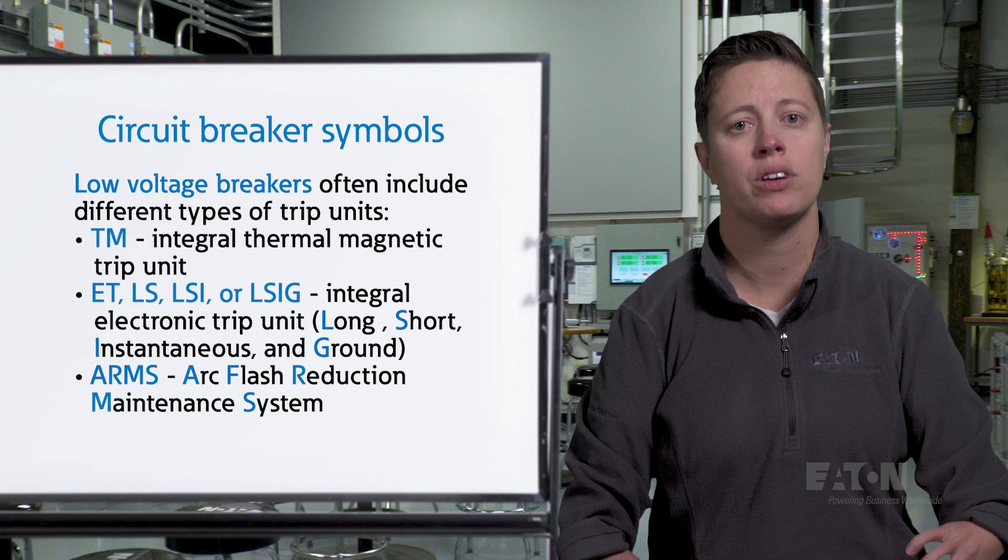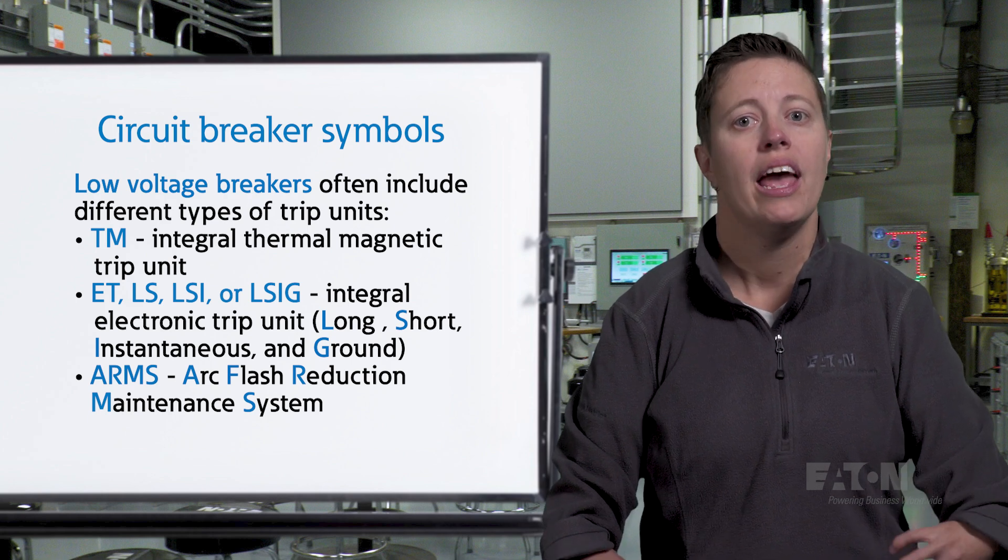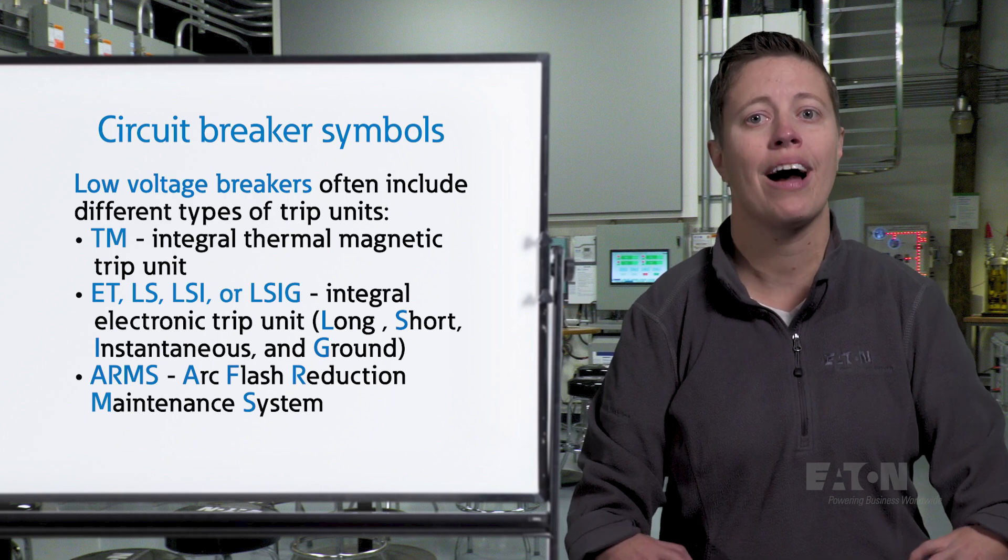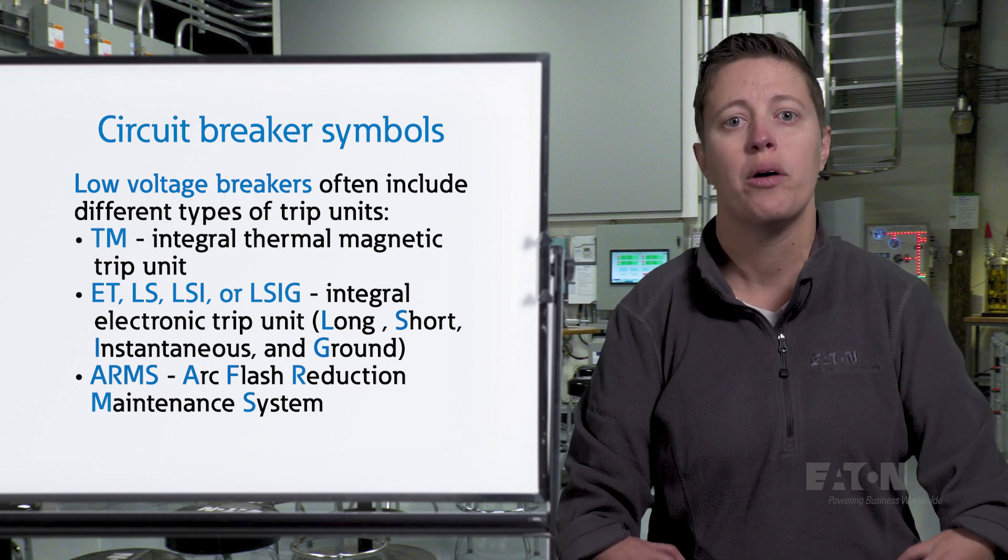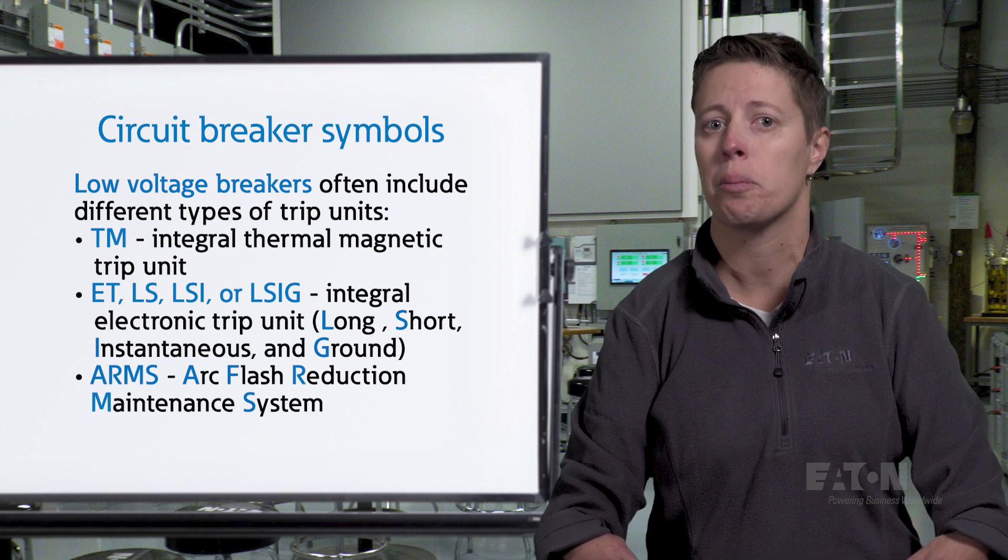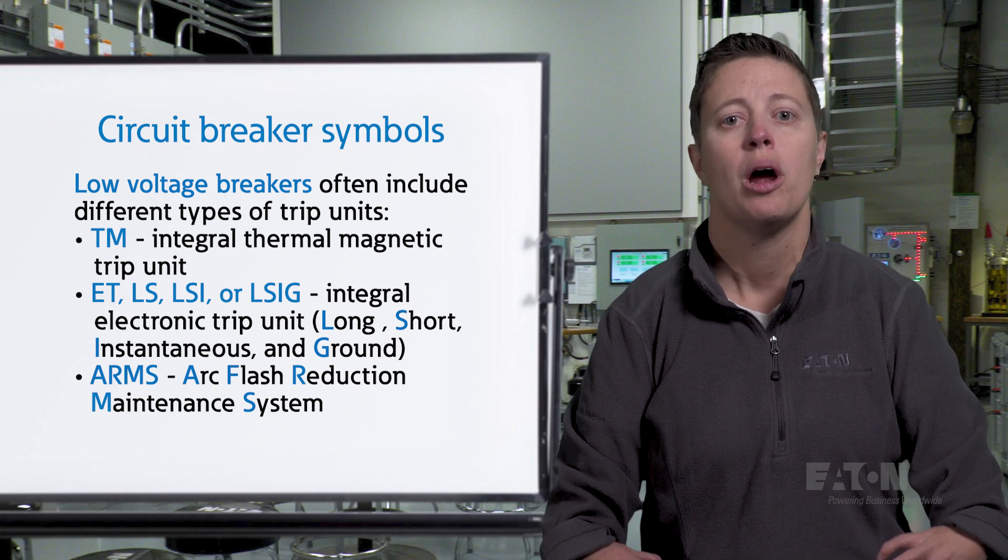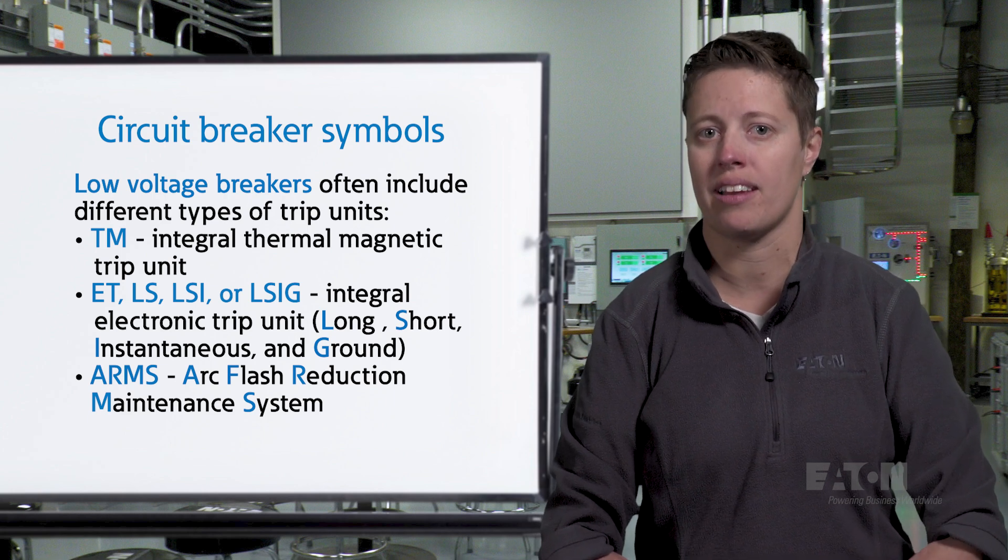ARMS stands for Arc Flash Reduction Maintenance System. Including ARMS as an option with an electronic trip unit provides a maintenance mode switch that, when activated, will trip the breaker faster than the programmable instantaneous setting at the first sign of a fault, protecting workers that may be working downstream.